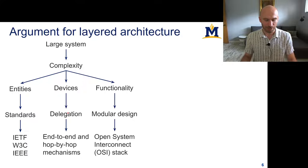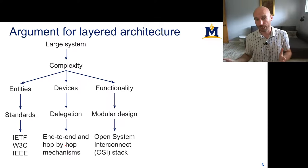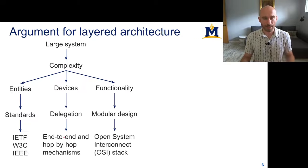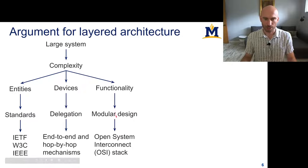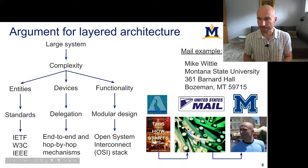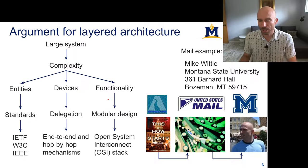As far as devices, there's delegation of functionality — all devices don't have to do everything. They can implement different parts of the protocols and achieve things like end-to-end reliability and hop-by-hop reliability, which work together to make sure data gets from one end to another correctly and efficiently. You can divide internet functionality into a modular design, organized through the Open System Interconnect or OSI stack, which I'll discuss in a moment.